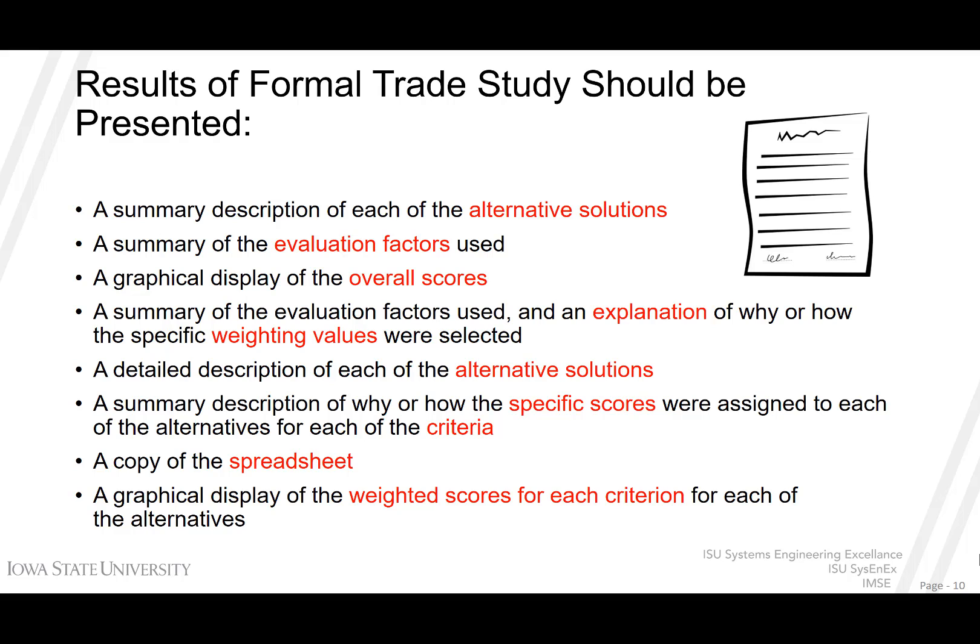By showing this in a formal publication, you present an unbiased view and take subjectivity and emotional context out of the equation. The summary description should include alternate solutions, a summary of the evaluation factors, a graphical display of the overall scores, and a summary of the evaluation factors used along with an explanation of why the weighted values were selected. It should also include a detailed description of each alternate solution, a summary of why specific scores were assigned to each, a copy of the spreadsheet detailing the analytical model, and a graphical display of the weighted scores for each criterion summarizing the overall trade-off decision.